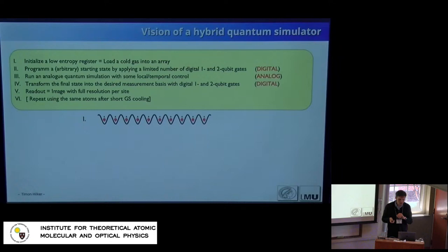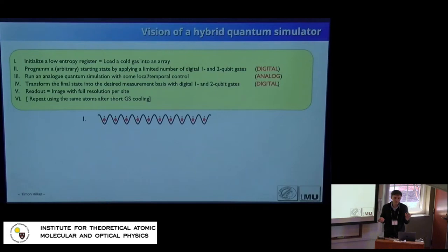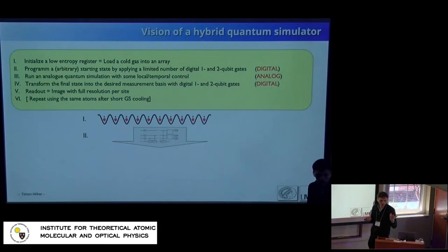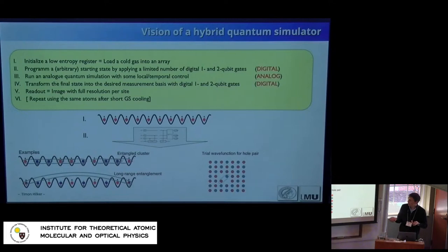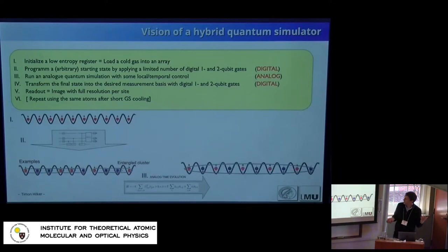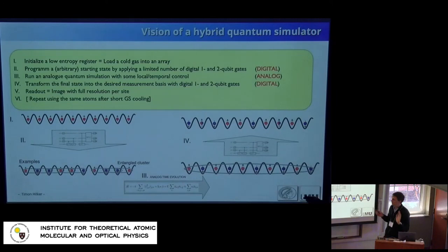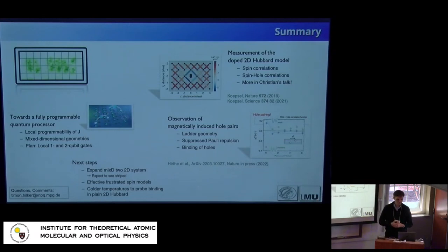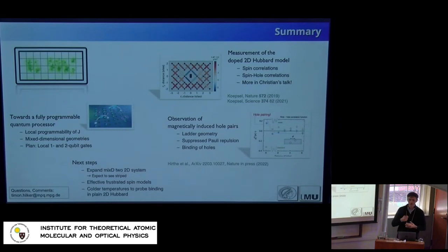The vision for this protocol: start with a simple low-entropy state, apply digital gates to move it into something complicated or into whatever target state you like — local clusters of entanglement, long-range entanglement without entanglement in between, or trial wave functions. Then switch to analog time evolution for the actual simulation, and finally apply more digital gates to read out in a chosen basis. To summarize, our main result is hole pairing in the mixed-dimensional system, which we take as a starting point to now go to extended 2D systems and characterize the properties of these hole pairs.